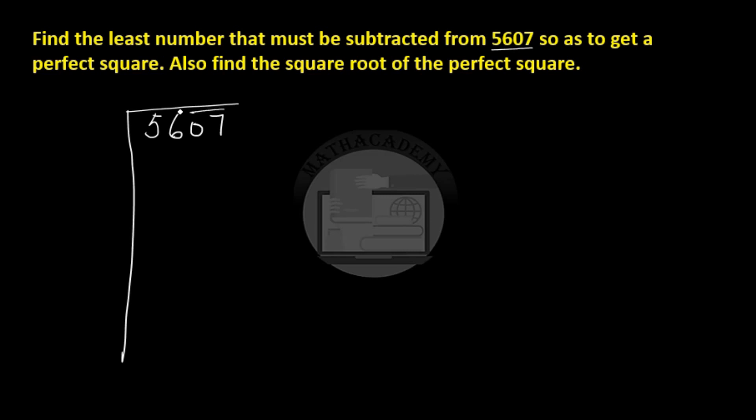Now the largest square number which divides 56 is 7 square. So 7 times 7 is 49. 56 minus 49 is 7. We take down the entire pair.